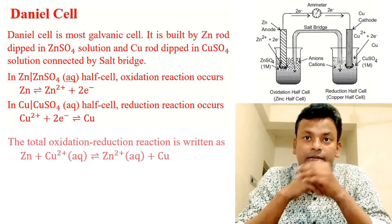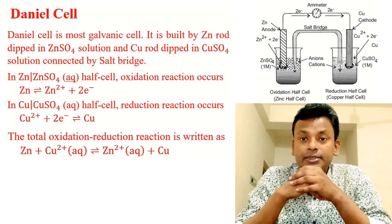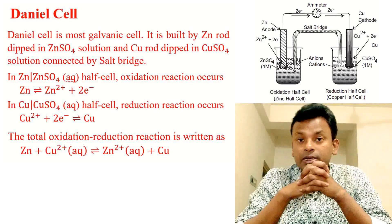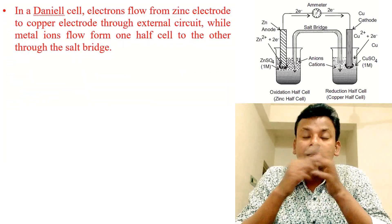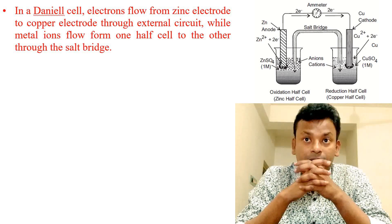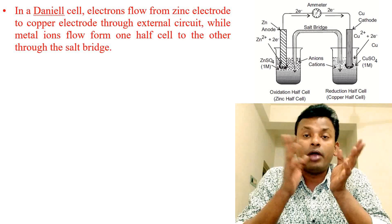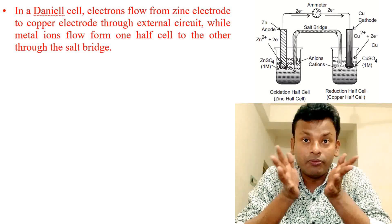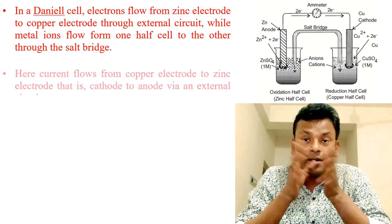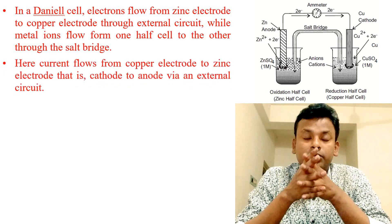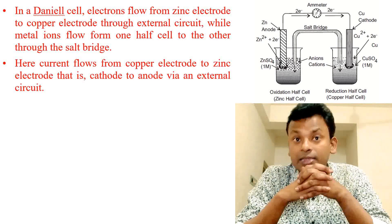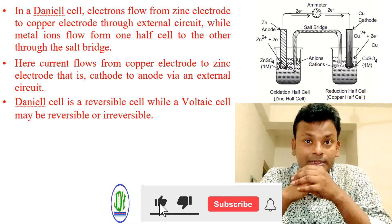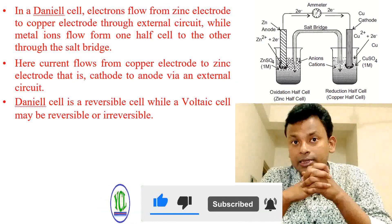The total reaction is: Zn + Cu²⁺(aq) → Zn²⁺(aq) + Cu. In a Daniel cell, electrons flow from the zinc electrode to the copper electrode through the external circuit, while metal ions flow from one half cell to the other through the salt bridge. Current flows from the copper electrode (cathode) to the zinc electrode (anode) via the external circuit. The Daniel cell is a reversible cell, while a voltaic cell may be reversible or irreversible.